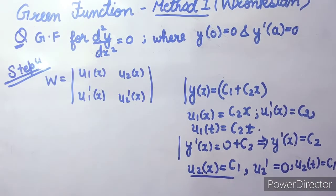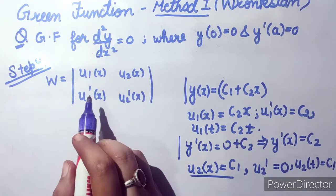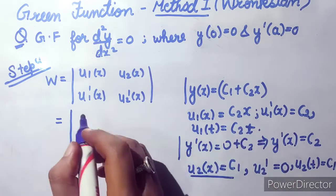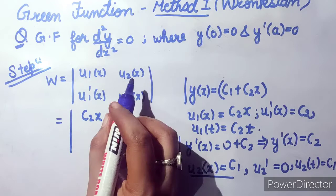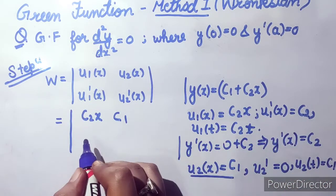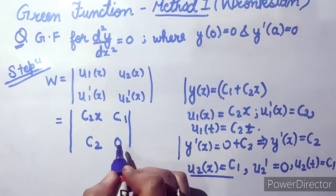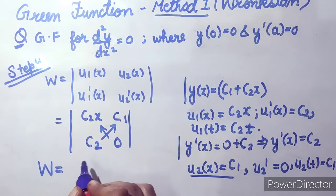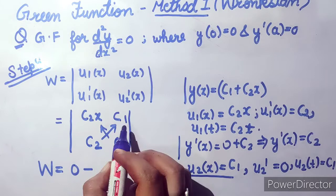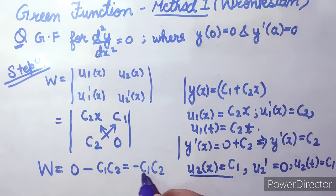Step four is to find the Wronskian W, calculated as the determinant of the matrix [u1(x), u2(x); u1'(x), u2'(x)]. Substituting: u1(x) = c2·x, u2(x) = c1, u1'(x) = c2, u2'(x) = 0. Solving the determinant: (c2·x)(0) − (c1)(c2) = −c1·c2. So W = −c1·c2.